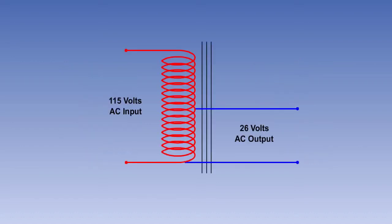Where AC is required for the operation of instruments on the aircraft, auto-transformers can be used to either step down or step up the source supply to the required voltage. The supply usually required for instruments is 26 volts AC.